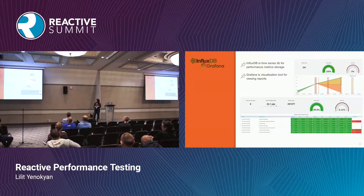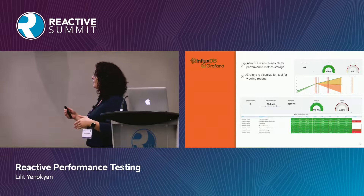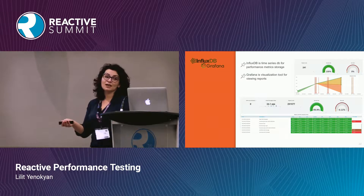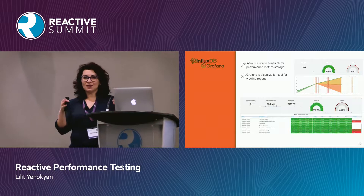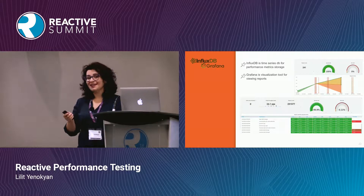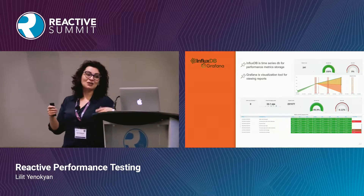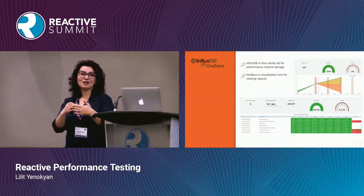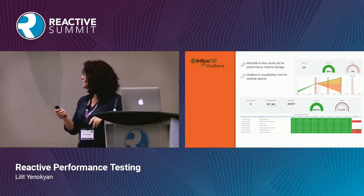The combination of InfluxDB and Grafana — InfluxDB is a time series database where we stored our performance testing results, and Grafana is used to visualize those reports. Grafana is useful because you can specify a time range, attach it to reports, and it's a really good visual indication if something goes wrong. If you choose to have a dashboard in the middle of the office showing the health of the system, Grafana is really good for showing progress over time, and it can keep as much data as you need.